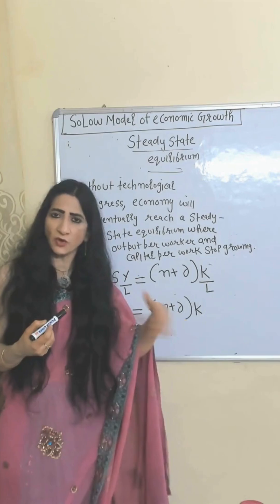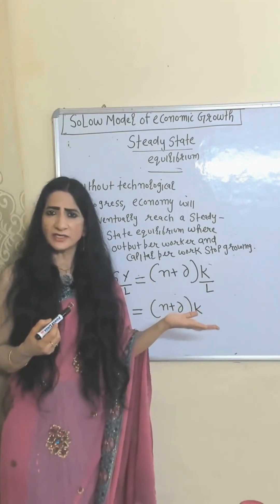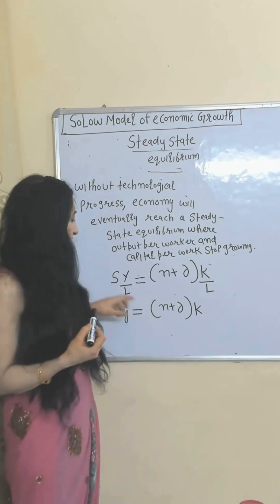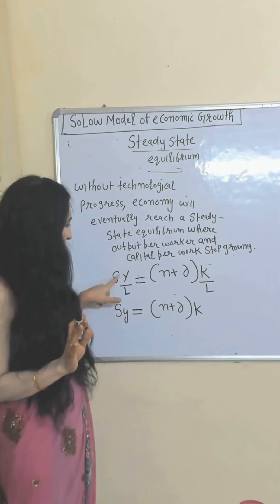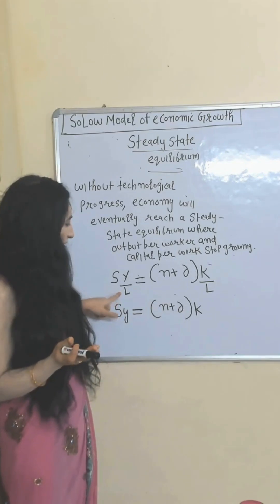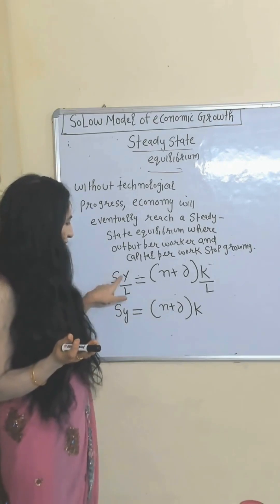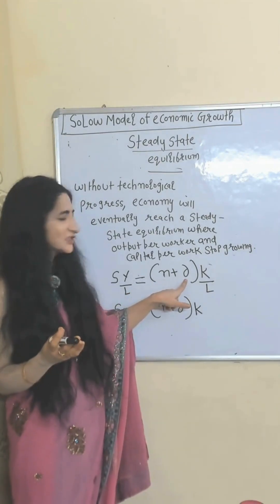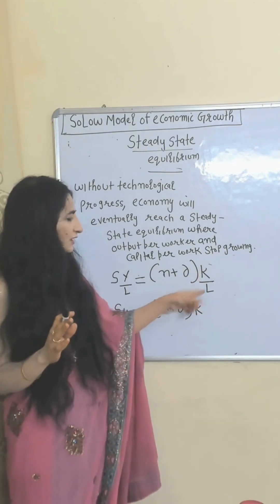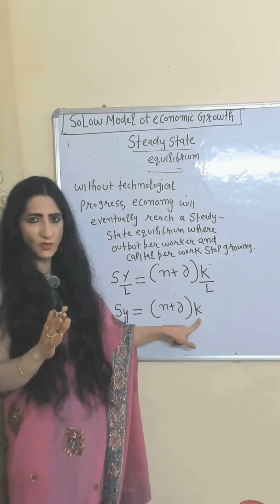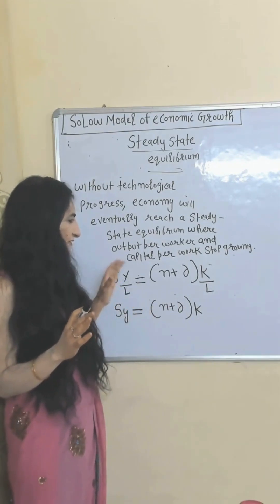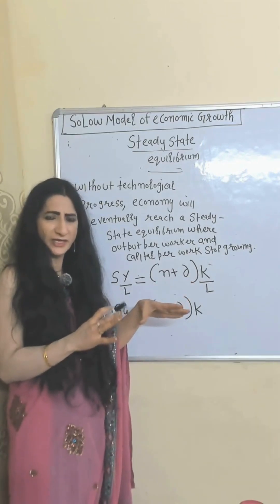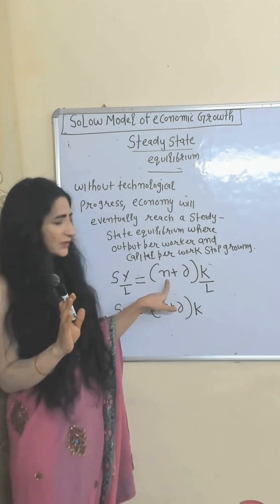According to Solow, without technology, the economy soon achieves a steady state equilibrium where output per worker and capital per worker stop growing — investment just covers the needs of growing population and depreciation. The steady state equation shows s (constant saving rate) times y (output per worker) equals (n + delta) times k (capital per worker), where n is population growth and delta is depreciation.